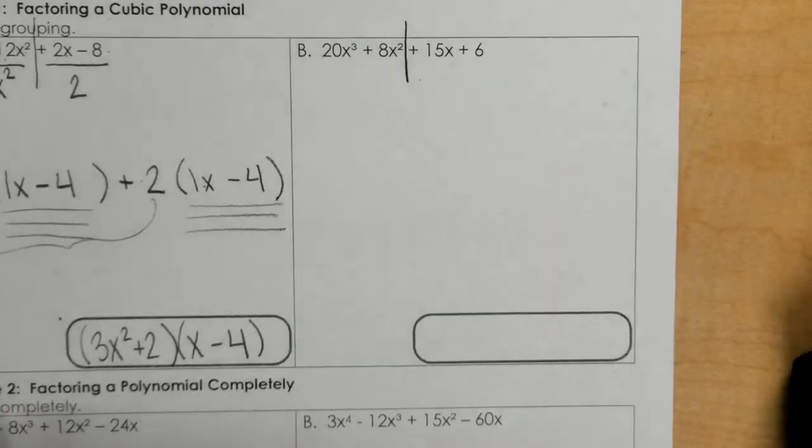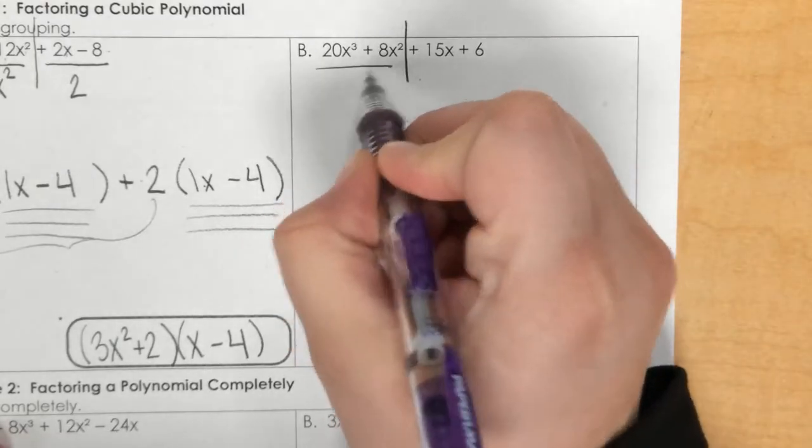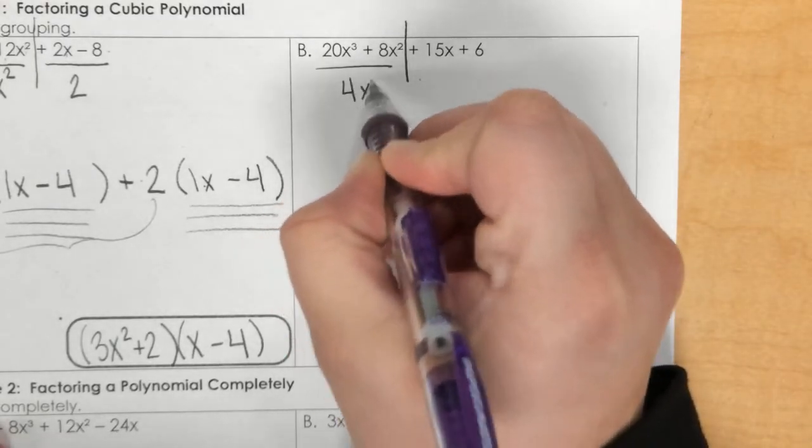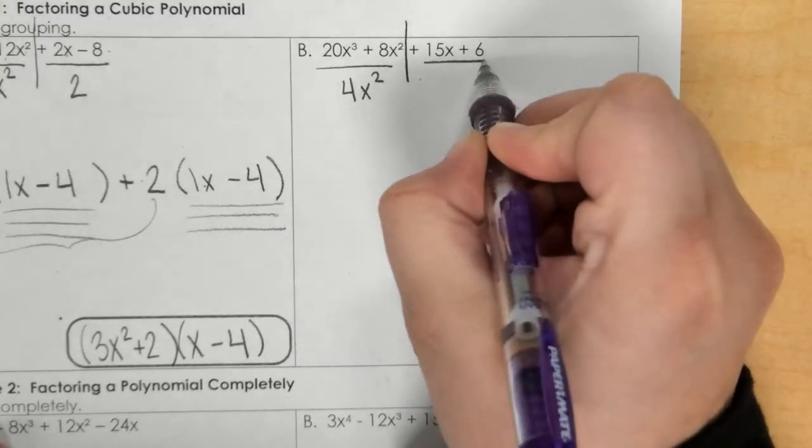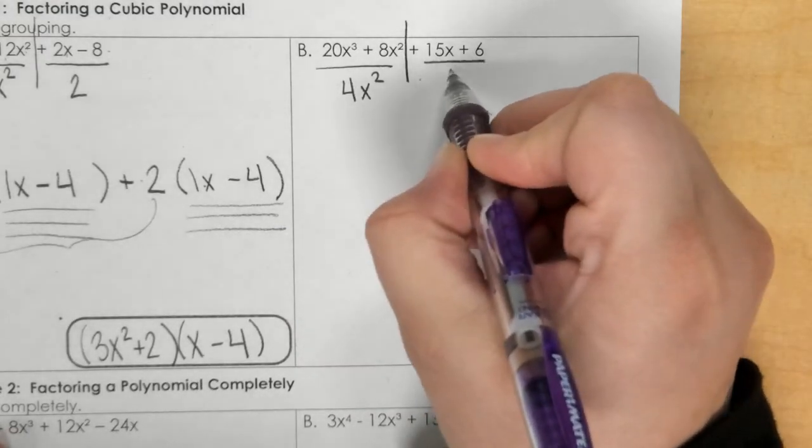You find the GCF of the first side, which would be 4x squared. You find the GCF of the second part, which is a 3.